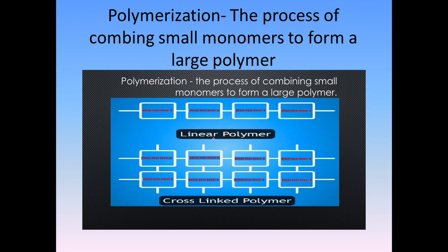There are two types of main polymers: one is a linear polymer, and the other one is a cross-linked polymer. Linear polymers are the polymers where the monomers are arranged linearly — you can see the red dots, those are the monomers, and they are arranged in a line.